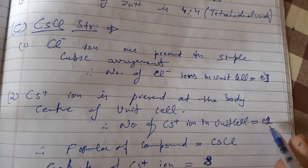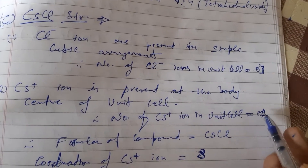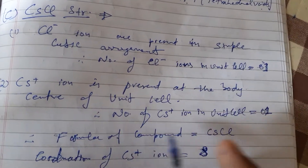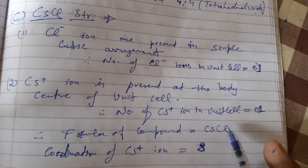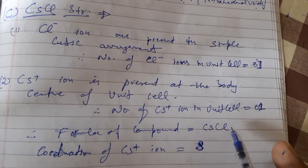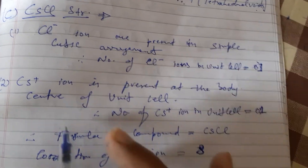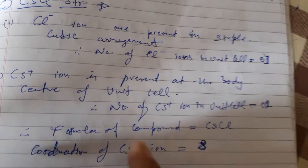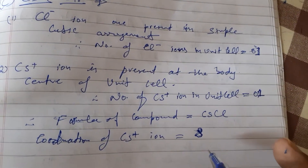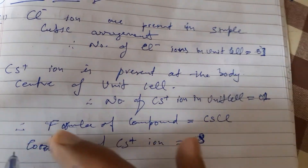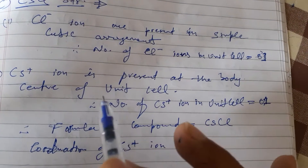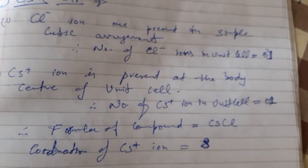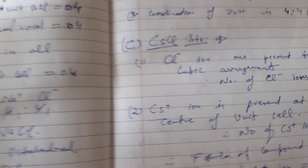The number of chloride ions in the unit cell is one and the cesium ion is also one. Therefore the formula of cesium chloride is CsCl, with a ratio of 1:1. For the coordination number: the single cesium ion at the body center will be touching the eight chloride ions present at the eight corners of the cube, giving coordination number 8:8.